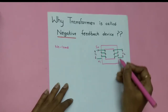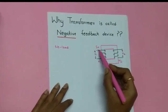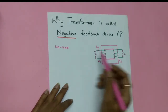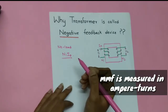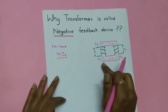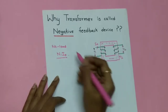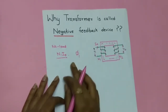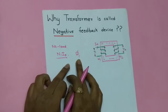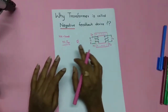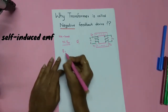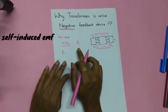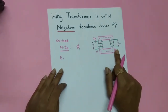Due to this current I0, an MMF will be produced. Say the primary has N1 turns and the secondary has N2 turns. When I0 flows through N1, the primary MMF N1·I0 is produced. Due to this MMF, a flux is produced in the transformer — let's call it φ1, since it is due to the current in the primary. Due to this flux, an EMF e1 is induced in the primary winding.